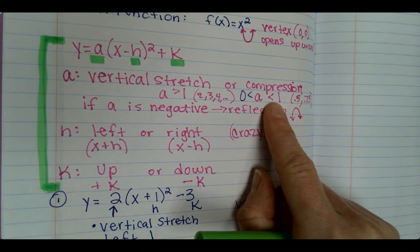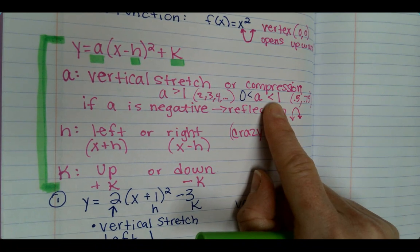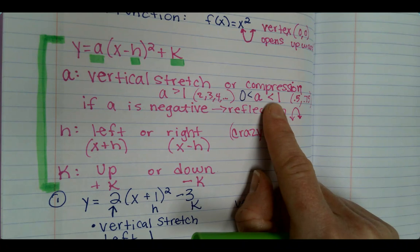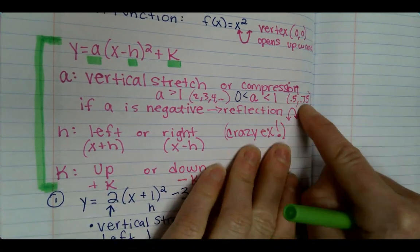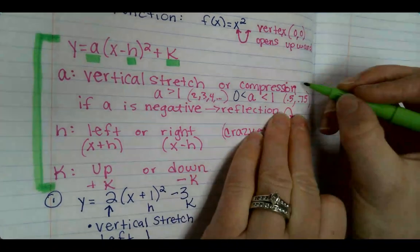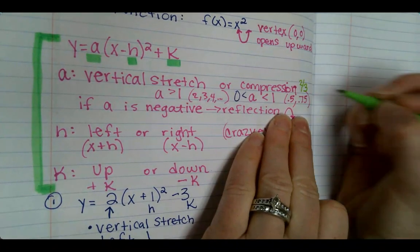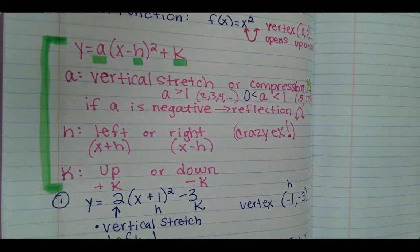When we determine whether it is a vertical stretch or compression, you don't look at the negative part of a, you only look at the actual number. So if the number is like 0.5, 0.75, you can also look at two-thirds.